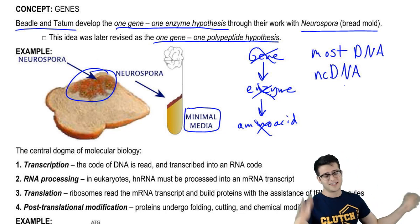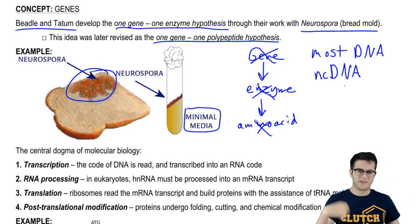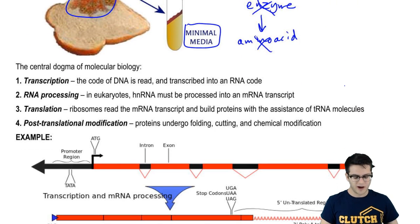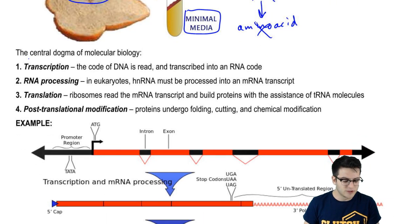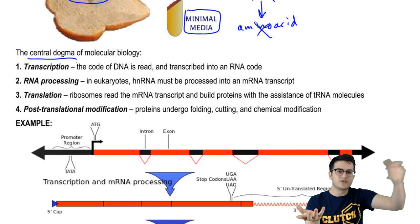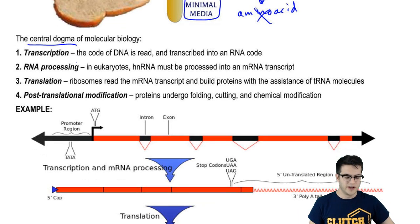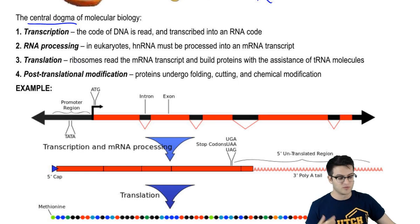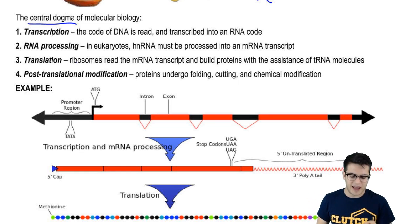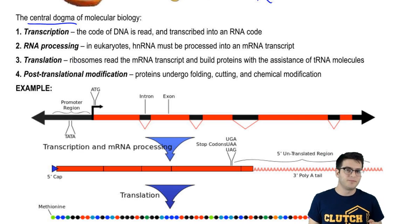We'll talk about what the rest of that DNA does — or at least what we know it does — in a later video. For now, let's talk about that DNA that does code for proteins. We've already talked about the central dogma of molecular biology — the process by which a gene is turned into a fully functional protein. In eukaryotes, this process has four big stages. There's transcription, where the DNA code is read and transcribed into RNA. In eukaryotes, that RNA has to go through RNA processing because the RNA produced initially from transcription is not ready to be turned into a protein yet.